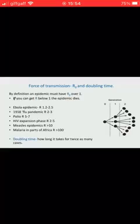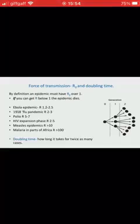And if the R is below one — let's say it's 0.5 — ten people give it to five people, give it to 2.5 people, and that disease is on its way out. The key to controlling an epidemic is to try and work out what its R is, and get it below one.